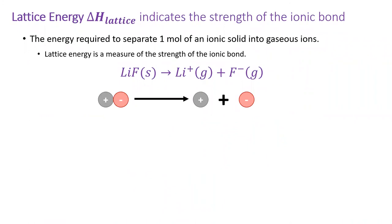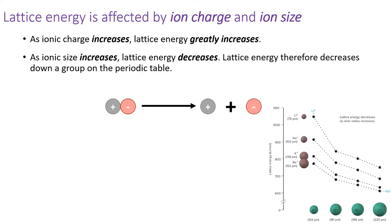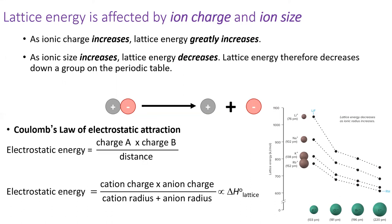The lattice energy is a good measure of the strength of the ionic bond. Specifically, the lattice energy is the energy required to fully separate the cation and anion of an ionic compound. Lattice energy is affected by ion charge and ion size. As ion charge increases, lattice energy greatly increases. As ion size increases, lattice energy decreases. Both of these trends can be explained by Coulomb's law of electrostatic attraction.